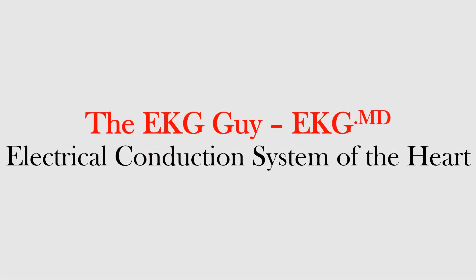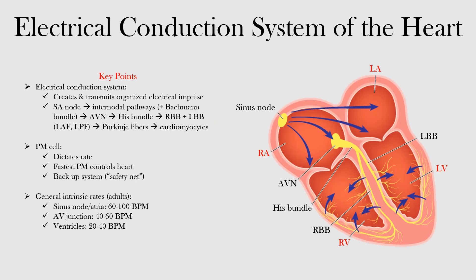In this lecture we will discuss the electrical conduction system of the heart. It is made up of specialized cells within the heart's walls — some of these cells have pacemaking functions and others permit the transmission of impulses through them. The main function of the system is to create an electrical impulse and transmit it in an organized manner to the rest of the myocardium.